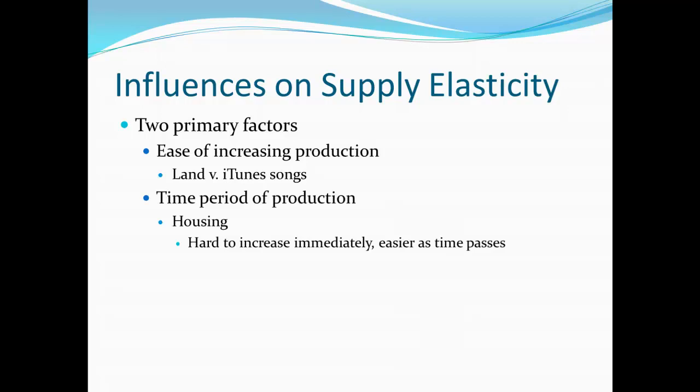The second factor would be the time period of production. For example, we might think of something like housing. With something like housing, it is very difficult to increase the quantity of housing available immediately. After all, it's going to take a certain amount of time. But as time passes, we can increase the quantity of housing on the market. It just takes time to build it.